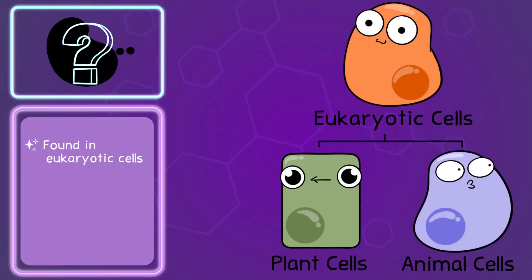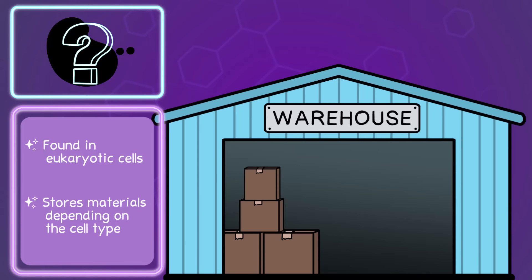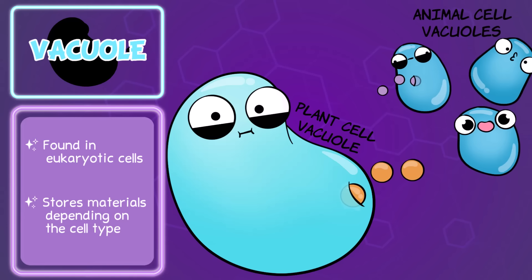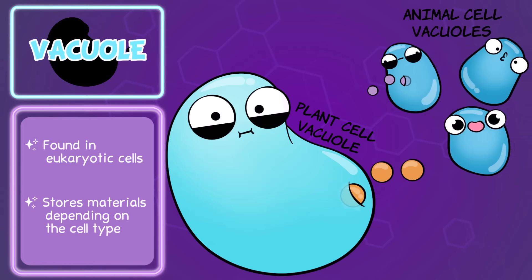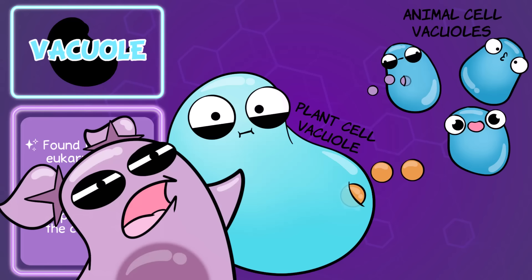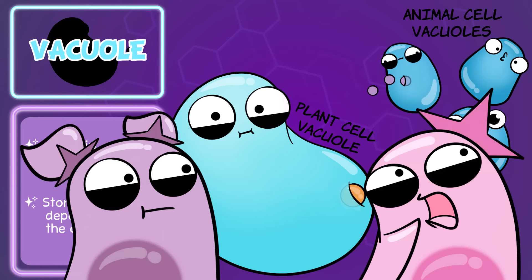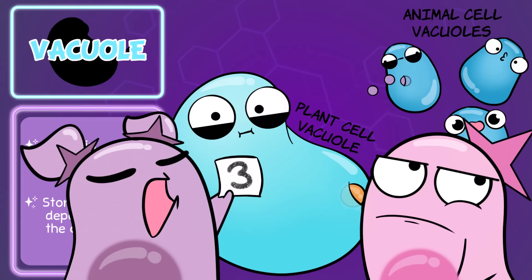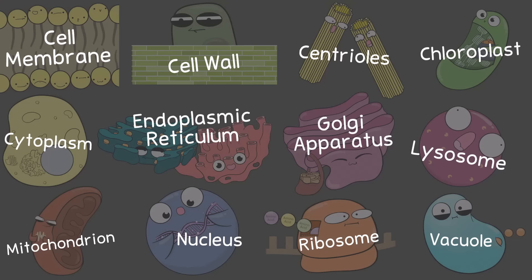This one can be found in eukaryotic cells, both plant and animal cells. It can store materials depending on the cell type. It is the vacuole. And in plant cells, it's usually one large one called the central vacuole. You tend to have smaller ones and several in the animal cell. What kind of stuff does it store? Well, it could be water, proteins, waste — it depends on what type of cell. Suspicious. I'm going to give it a 3 out of 10.